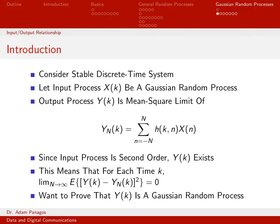Our input process x(k) is going to be a second-order Gaussian random process, input into a stable discrete time linear system. That's important because we've already established that when working with stable systems with second-order input processes, the output random process is always well defined — it exists in a mean square sense. Specifically, the output y(k) is the limit as N goes to infinity of y_N(k), and that quantity squared goes to zero.